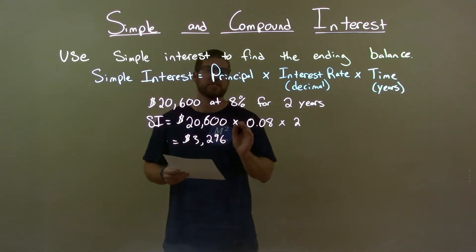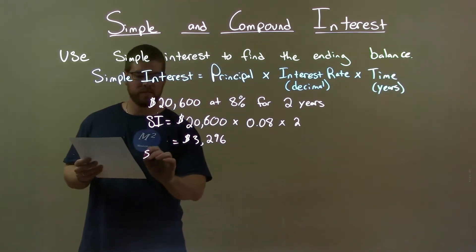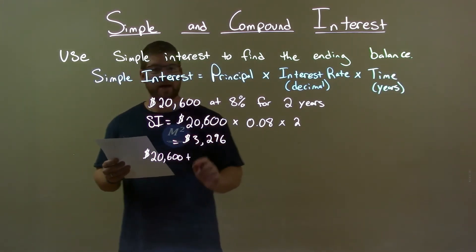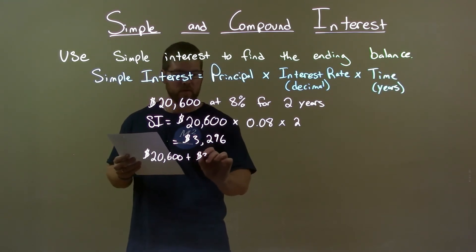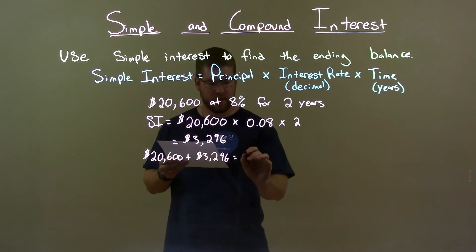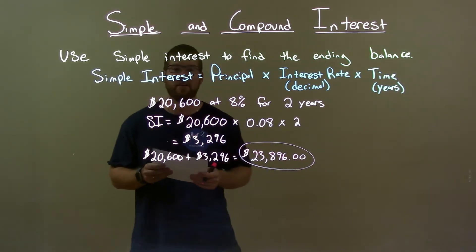Now that's how much interest I've earned. I have to add back my principal to get the ending balance. So, principal $20,600, add that to the interest $3,296, to get my final answer here, ending balance of $23,896.00. And there we have it.